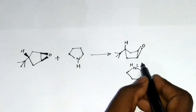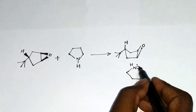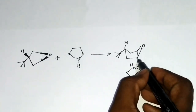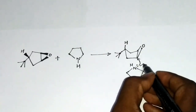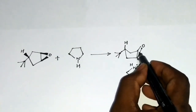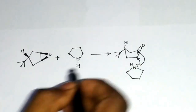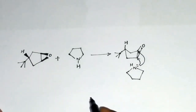The lone pair of electrons from here can attack this position. It can also attack this other position. We will consider each case individually.